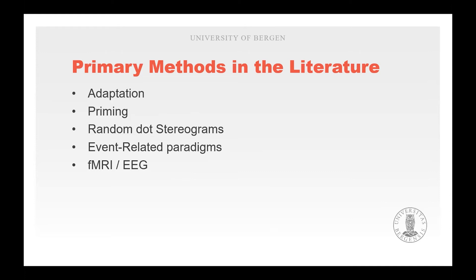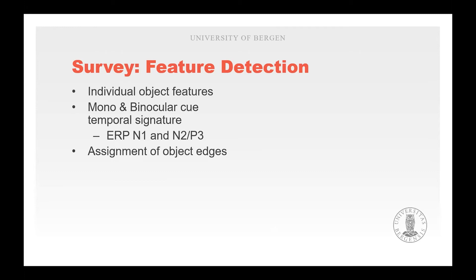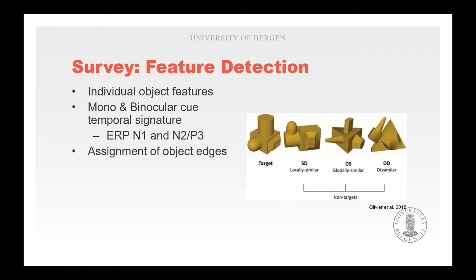For our synthesis we'll briefly look at feature detection and object perception related to stereopsis and different depth cues. Feature detection builds on the edge detection performed in V1, extracting local and global features of an object. Viewing these objects in either 2D or 3D shows differences in ERP responses, specifically N1 and N2/P3, which can be related to the assignment of object structure.